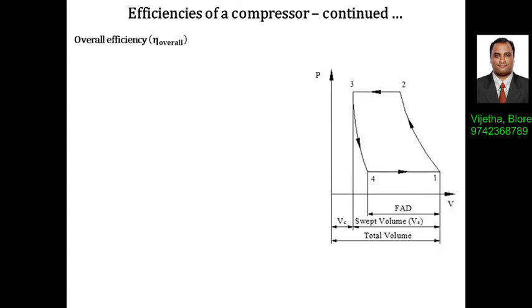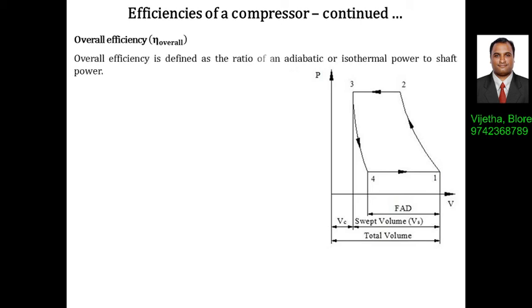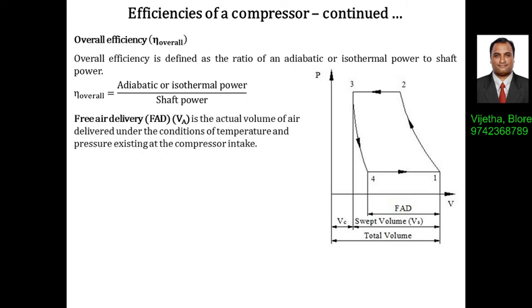One more type is called the overall efficiency of the compressor. The overall efficiency is defined as the ratio of adiabatic or isothermal power to the shaft power. This is called the overall efficiency.